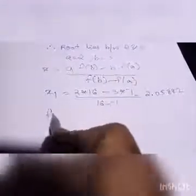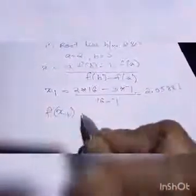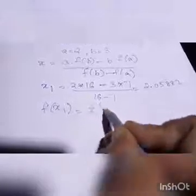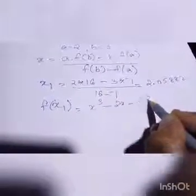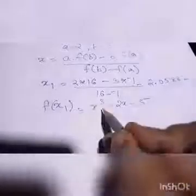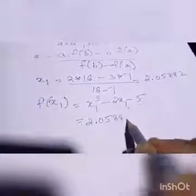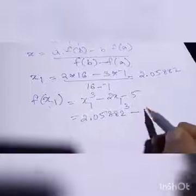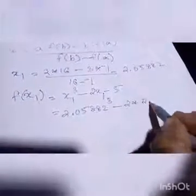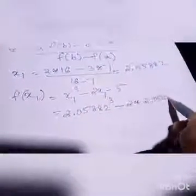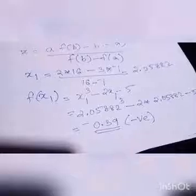Now you have to find f(x1). f(x1) means we are having the formula x cube minus 2x minus 5. So since this is f(x1), x1 cube minus 2x1 minus 5. Substituting 2.05882 the whole cube minus 2 into 2.05882 minus 5. So for x1 we will get minus 0.39 and that is a negative value.